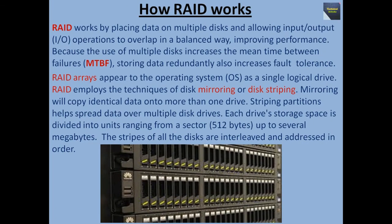Now we talk about how RAID works. RAID works by placing data on multiple disks and allowing input/output operations to overlap in a balanced way, improving performance. Because the use of multiple disks increases the mean time between failures (MTBF), storing data redundantly also increases fault tolerance. RAID arrays appear to the operating system as a single logical drive. RAID employs the techniques of disk mirroring or disk striping — mirroring copies identical data onto more than one drive, while striping partitions spread data over multiple disk drives. Each drive's storage space is divided into units ranging from a sector (about 512 bytes) up to several megabytes, and the strips of all the disks are interleaved and addressed in order.